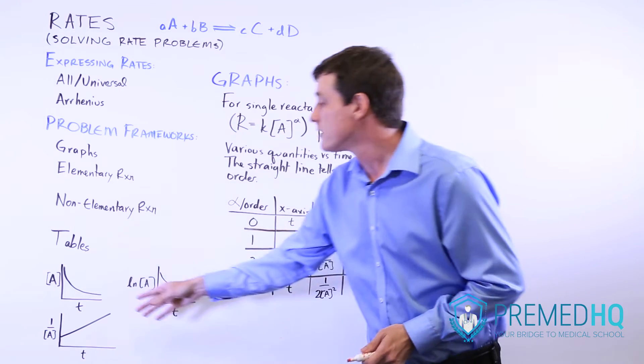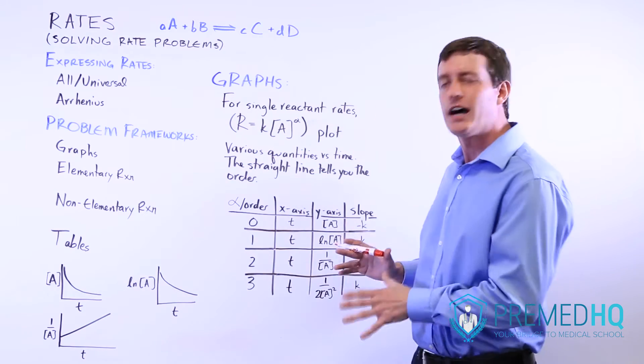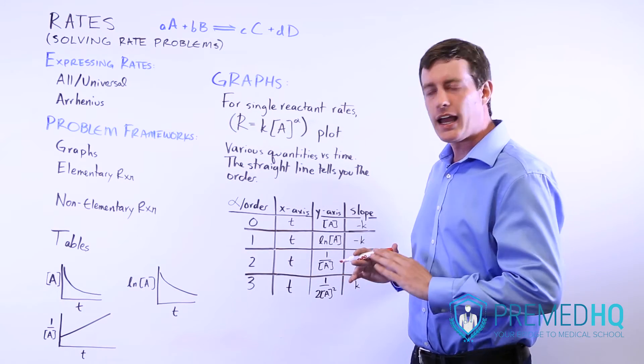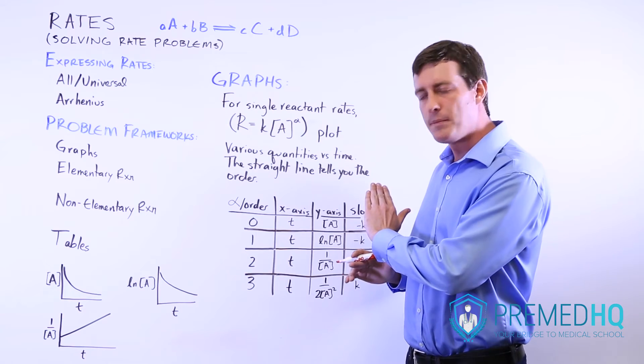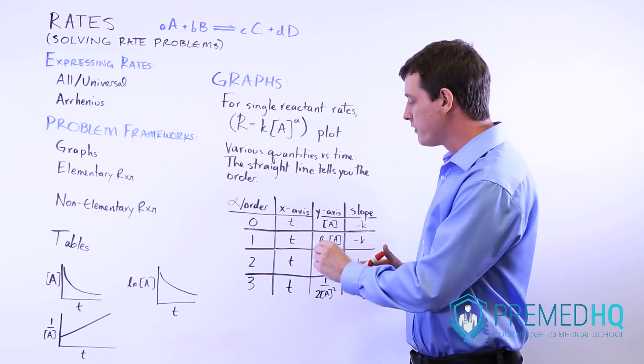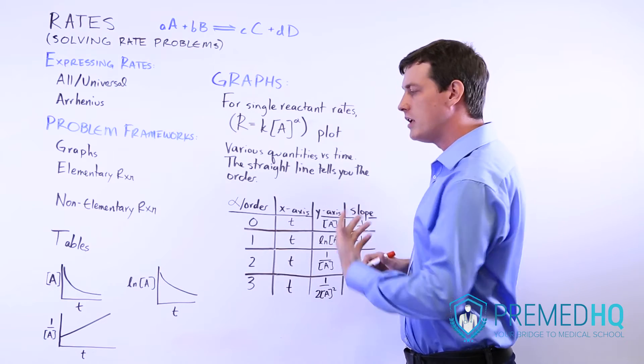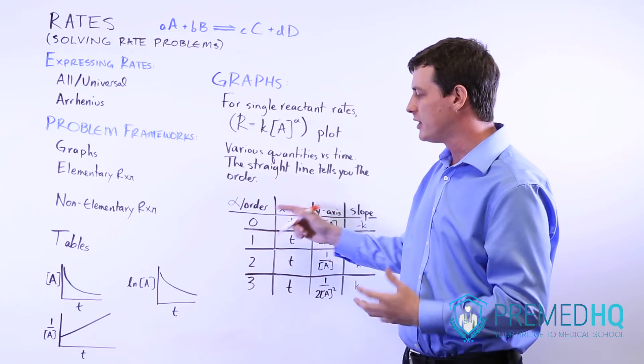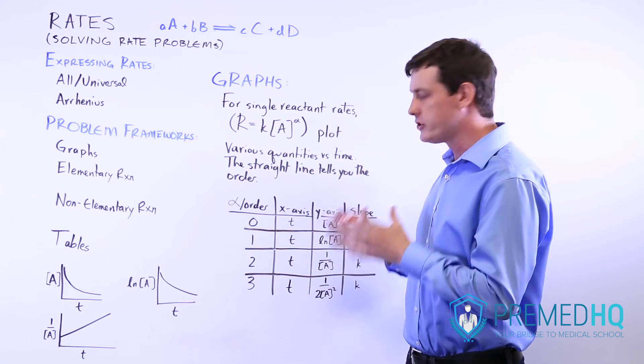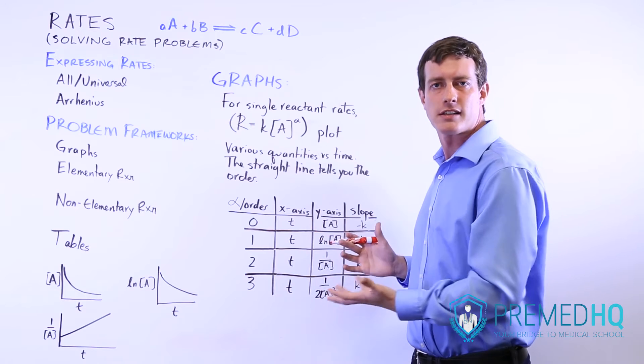What we see here is when we graph 1 over A versus time, now we have a straight line. And it has an upward slope. And so because 1 over A versus time yields a straight line, that tells us that alpha or the order must be 2. It must be second order with respect to A.